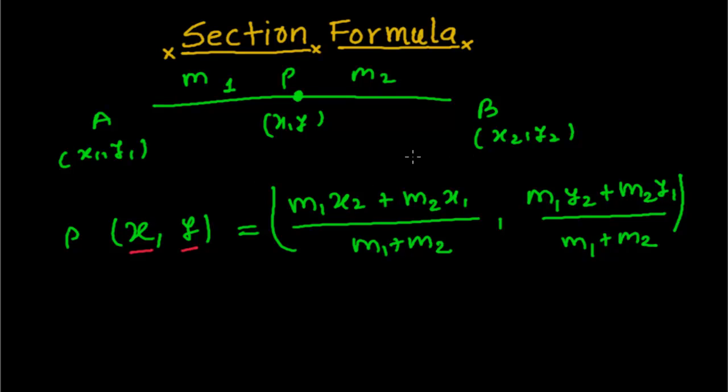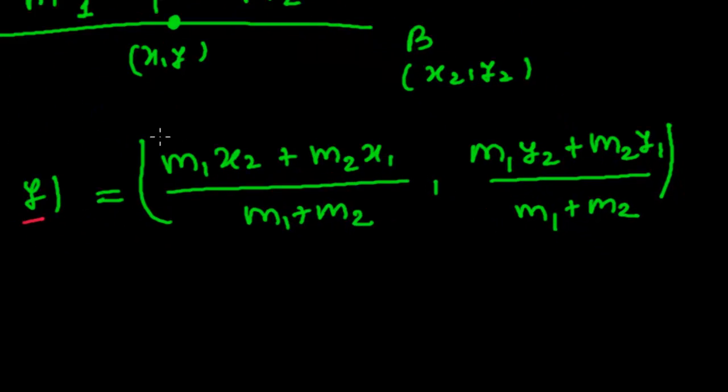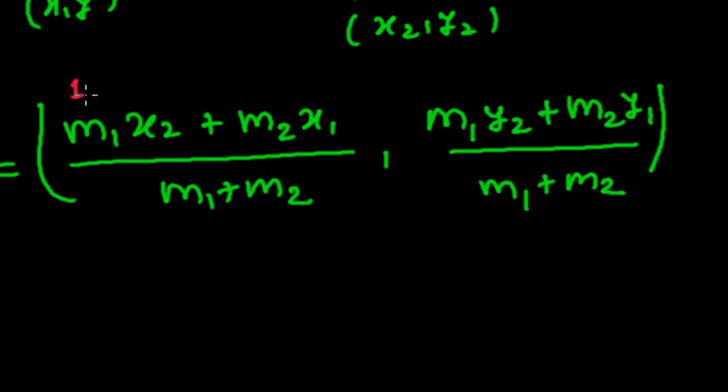But in the place of x2 and x1, there is y2 and y1. Simply see, you have to remember 1 and 2. Simply, if m1 is 1, then the variable part x or y should be 2.